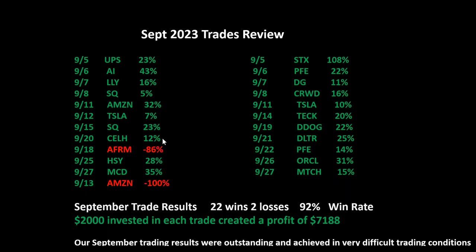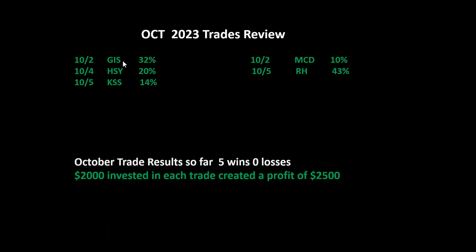September trading results were outstanding and achieved in very difficult trading conditions. The SPY got into a nice bullish pattern in spring through summer and everybody was getting long, then it reversed and trapped all the longs. Then it looked like it was going to be short and reversed again up trapping all the shorts - very difficult. October so far we've had five trades and actually six or seven including Tesla yesterday and Abercrombie and Fitch today, where we took a nice profit this afternoon. We're seven and zero for October, up about $2,500.